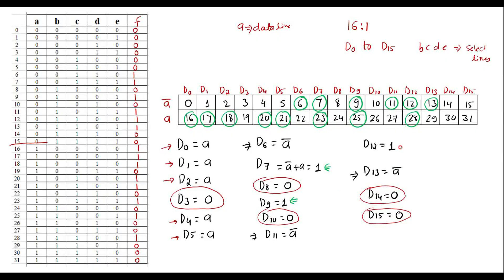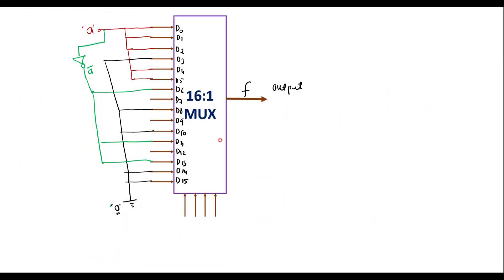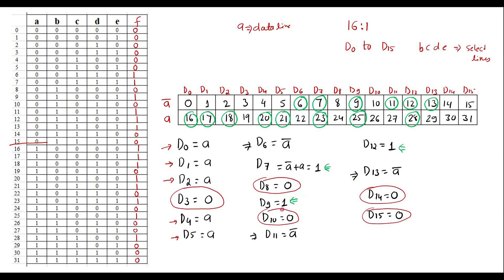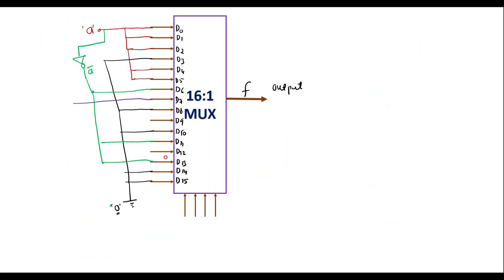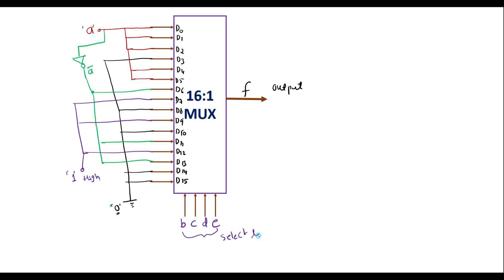The remaining inputs: d7, d9, and d12 are connected to logic 1, that is high. These three inputs are shorted and connected to logic 1. The select lines are b, c, d, and e, and this is the output f. This is the circuit diagram for the 16-to-1 MUX, where inputs are a, a bar, 1, and 0, with b, c, d, e as select lines and one output f.